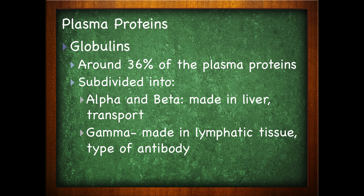The other two plasma proteins are the globulins and the fibrinogens. The globulins make up around 36% of the plasma proteins, and we subdivide these into alpha, beta, and gamma. The alpha and beta are made in the liver and deal with transportation, while the gamma is made in lymphatic tissue and deals with types of antibodies. There are also videos on the lymphatic system if you want to learn more — be sure to check those out.